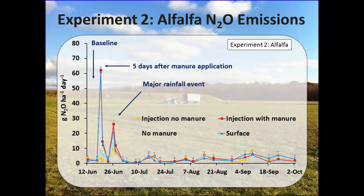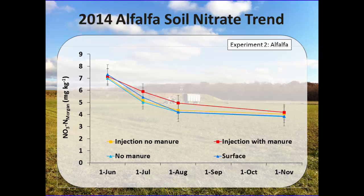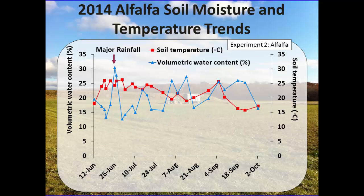This is the trend of nitrous oxide emissions in alfalfa over the growing season. You can see two peaks: five days after manure application and at the major rainfall events. The peaks were fairly small throughout the growing season. Soil nitrate was higher in the beginning of the growing season and decreased going forward. The soil moisture content plot shows a spike at the major rainfall events, which aligns with our emission peaks.